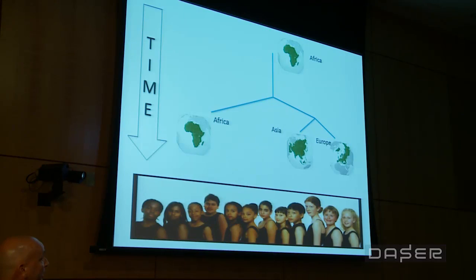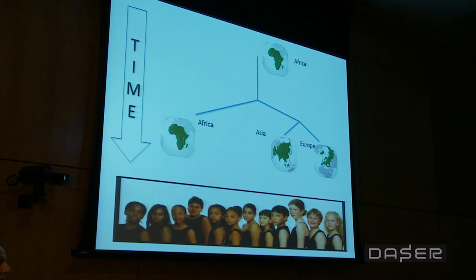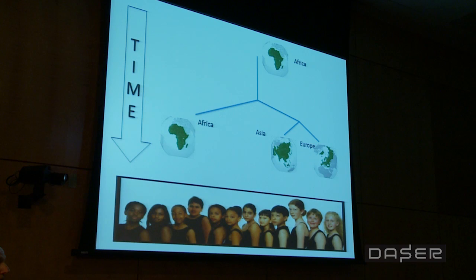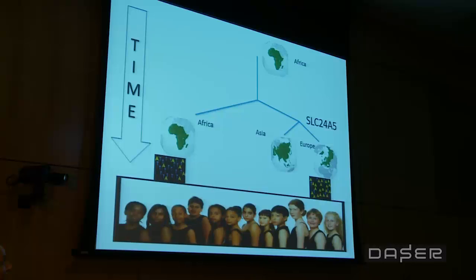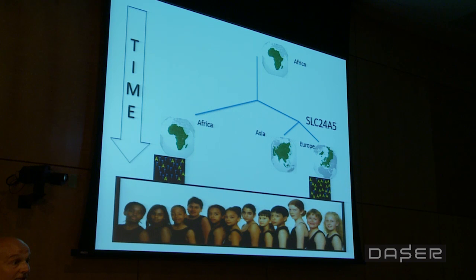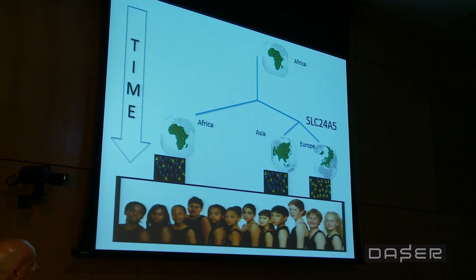Using a timeline of migration from Africa, we can map the gradation of pigmentation across human populations. One gene involved in controlling pigmentation is SLC24A5. In Europe, where skin is lighter, mostly the A allele is found. In Africa, mostly the other allele. In Asia, where skin is also lighter, the allele distribution looks more like Africa — meaning the genetic repertoire controlling lighter skin in Asian populations is different from that in European populations.